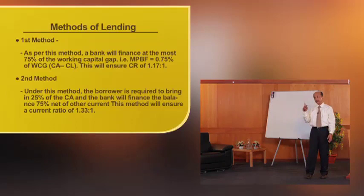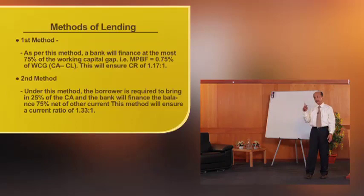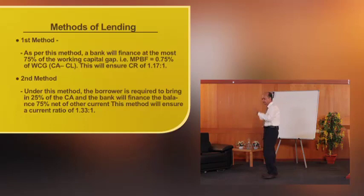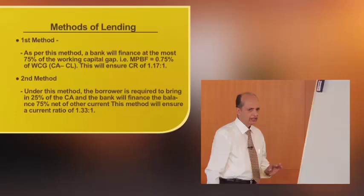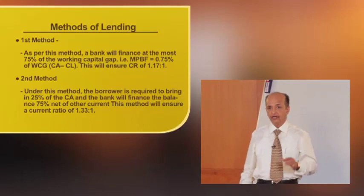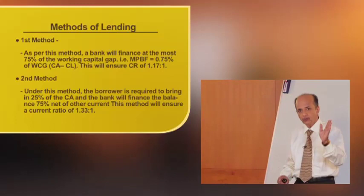Under the second method, the requirement for the unit's margin is different. The unit is required to bring in at least twenty-five percent of the total current assets. So in the first method, the unit brings in twenty-five percent of the working capital gap, whereas in the second method, the unit is required to bring in twenty-five percent of the current assets.